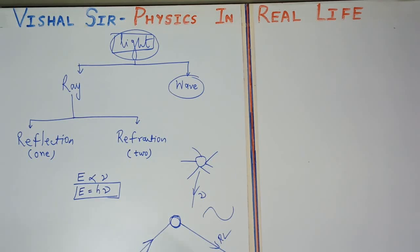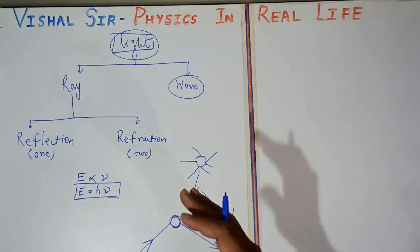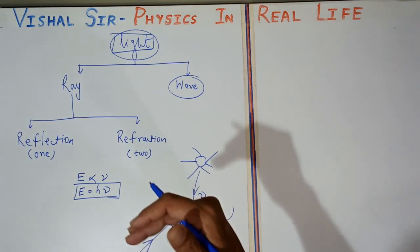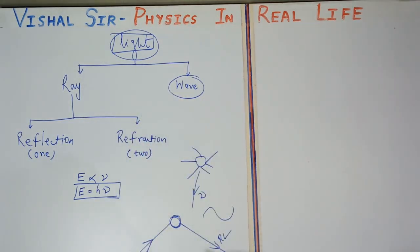Light travels in a straight line. The next common phenomenon of light is the formation of shadows — when an object is placed in light, you get a shadow, just like the shadow of a hand you can see here.